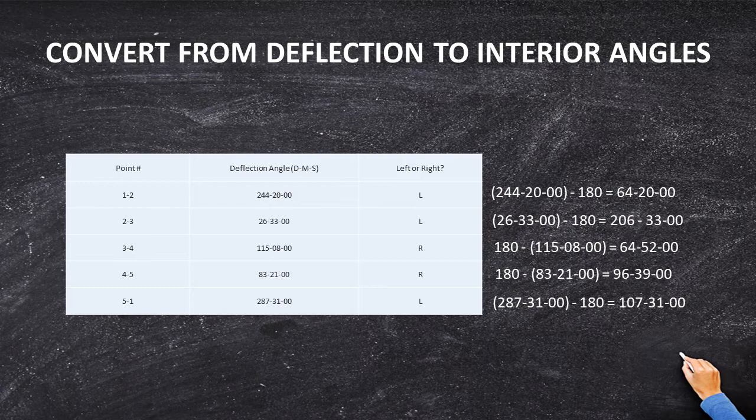Angle 3-4 is 115°08'00" and that is to the right. So 180° minus 115°08'00" equals 64°52'00". Next, angle 4-5: 180° minus 81°21'00" equals 96°39'00".